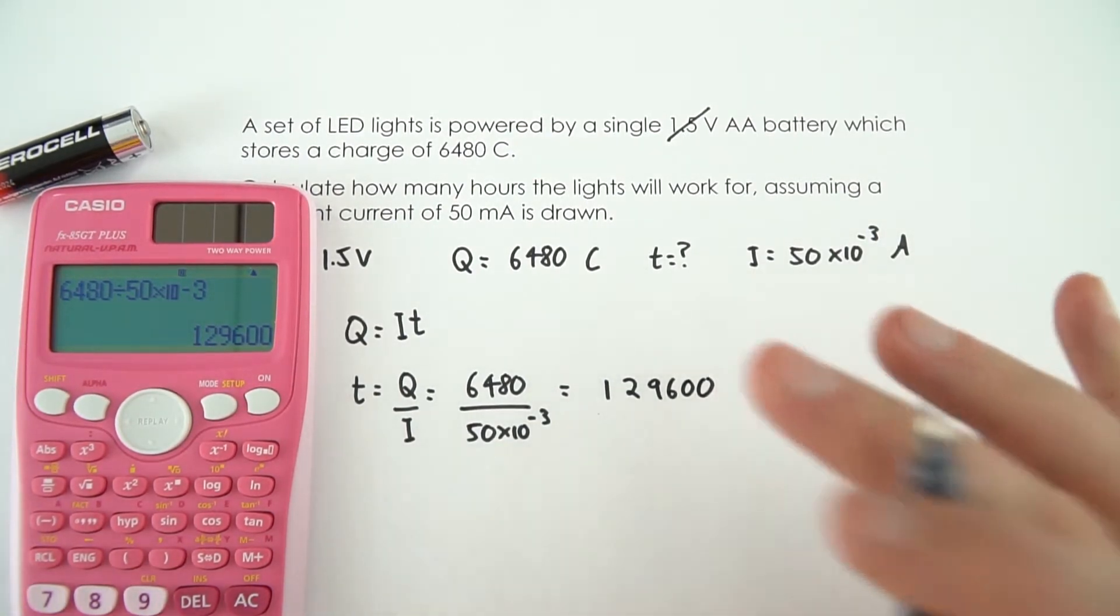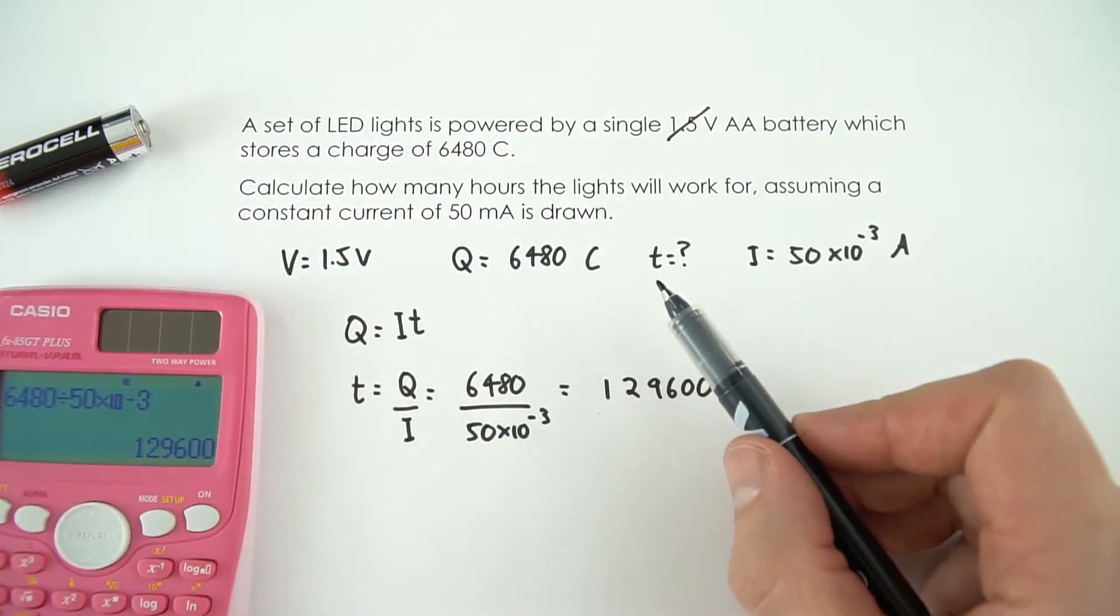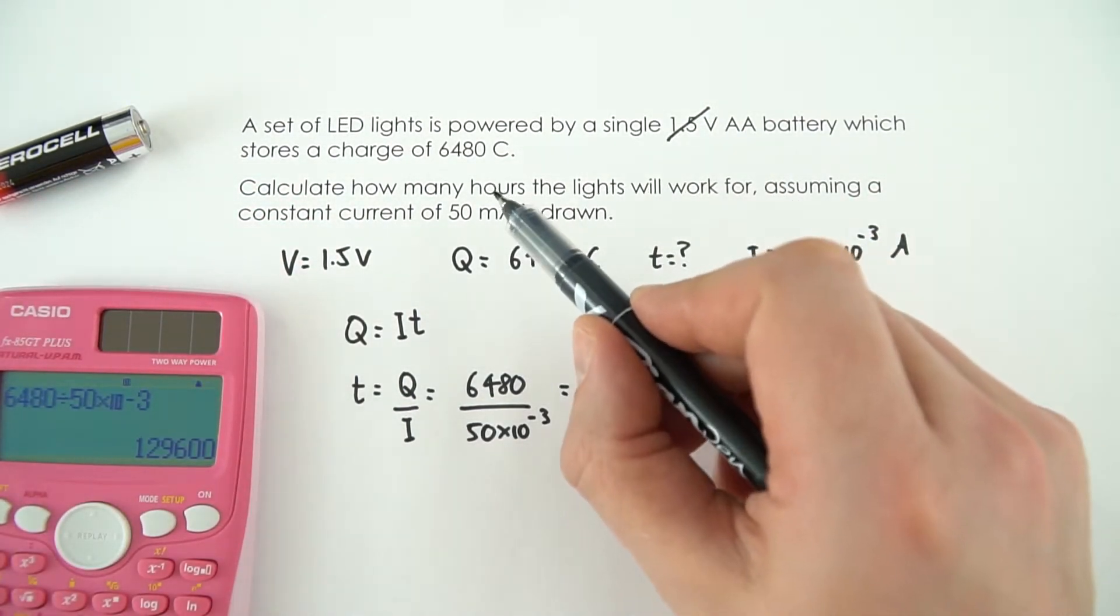That's a big number. Is that right? Well this is the amount of seconds that the light is going to be working for but we need to convert it into hours which is what our question is asking.